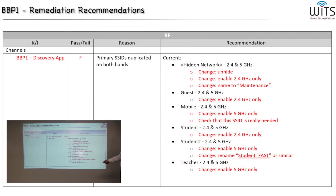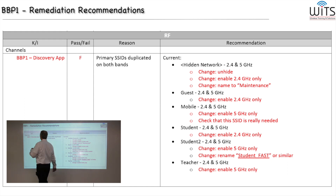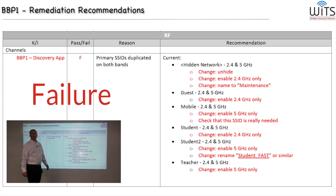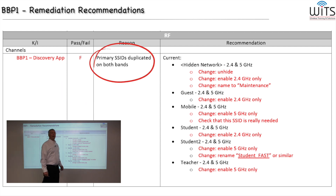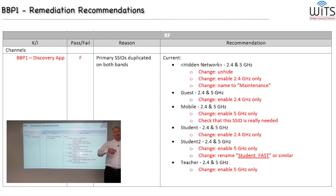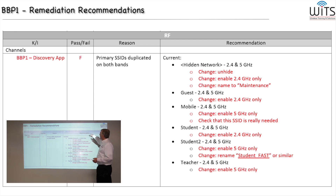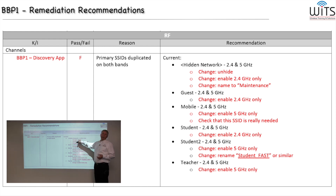The scorecard detail helps determine what our report will recommend. For the key performance indicator 'channels,' baseline best practice number one gets a failure rating. The reason is that primary SSIDs are duplicated on both bands with no deliberate design reason — they were just turned on by default. We're not saying never do it, but use an educated design decision. We also note there are six SSIDs in use, and we're not sure all six are needed.